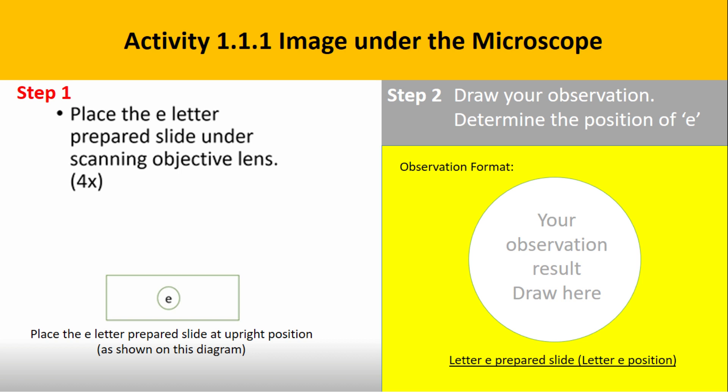For activity 1.1.1, obtain accurate image. Place the letter E prepared slide under the scanning objective lens at the right position, then draw the position of the letter E that you view under the scanning objective lens on your observation sheet.